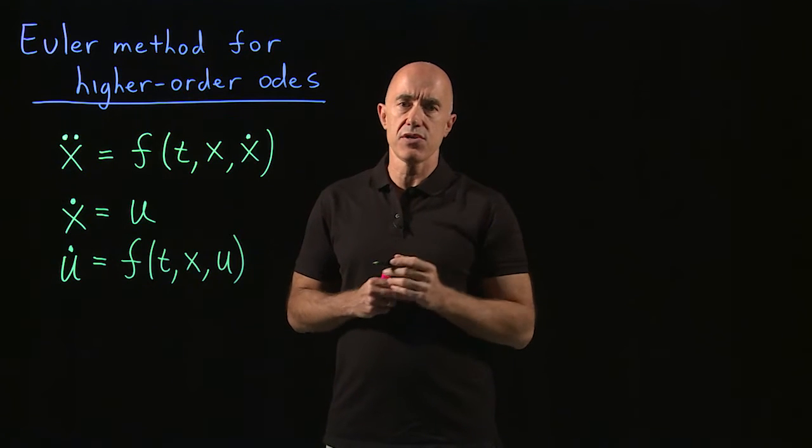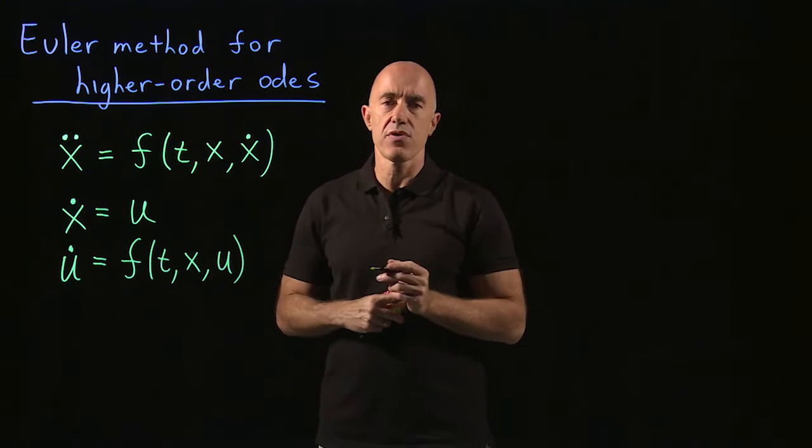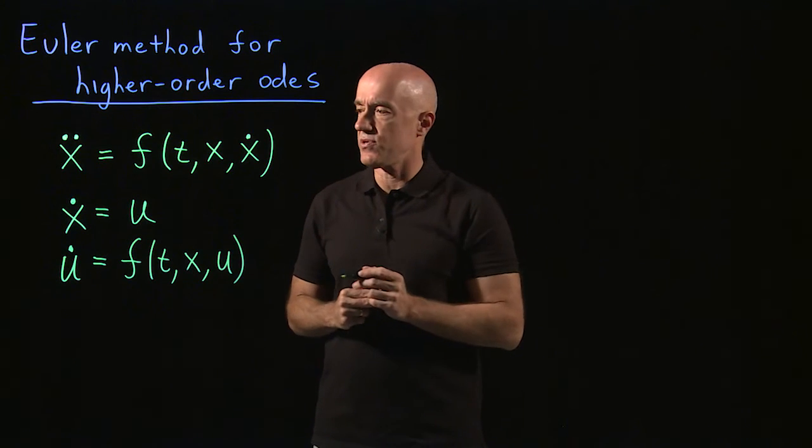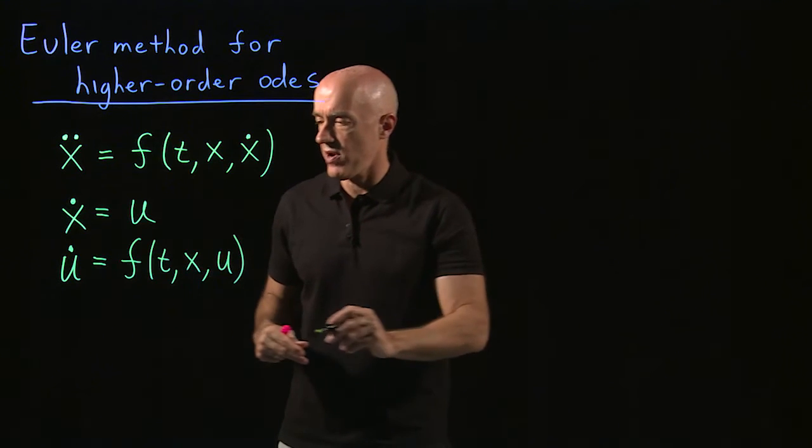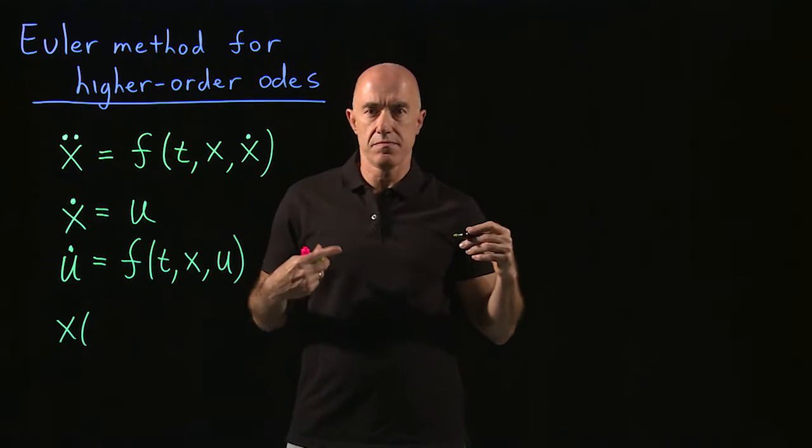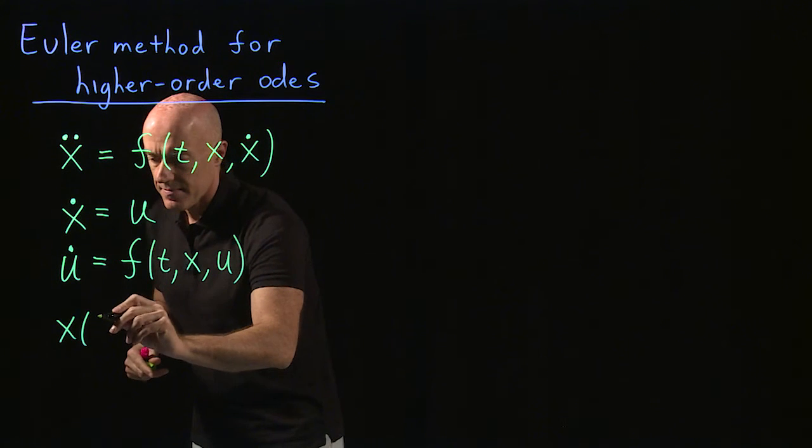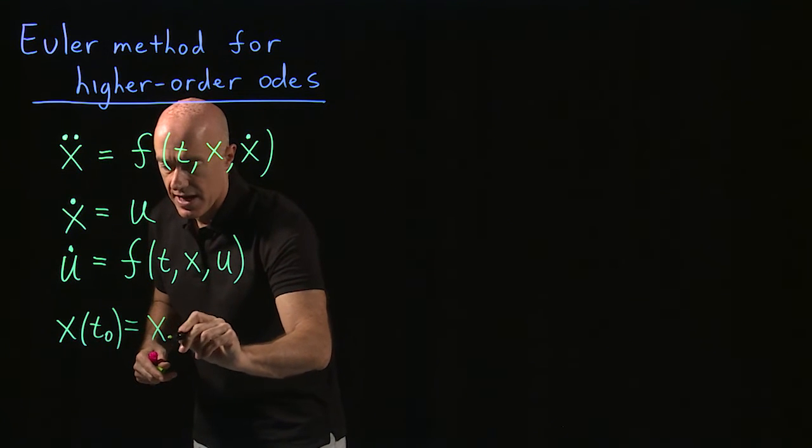We're going to need the initial conditions to solve this. For a second order equation, you need two initial conditions. Here, for the two first order equations, we see that we'll need some initial condition. T naught, say, x of t naught is some initial value, x naught.